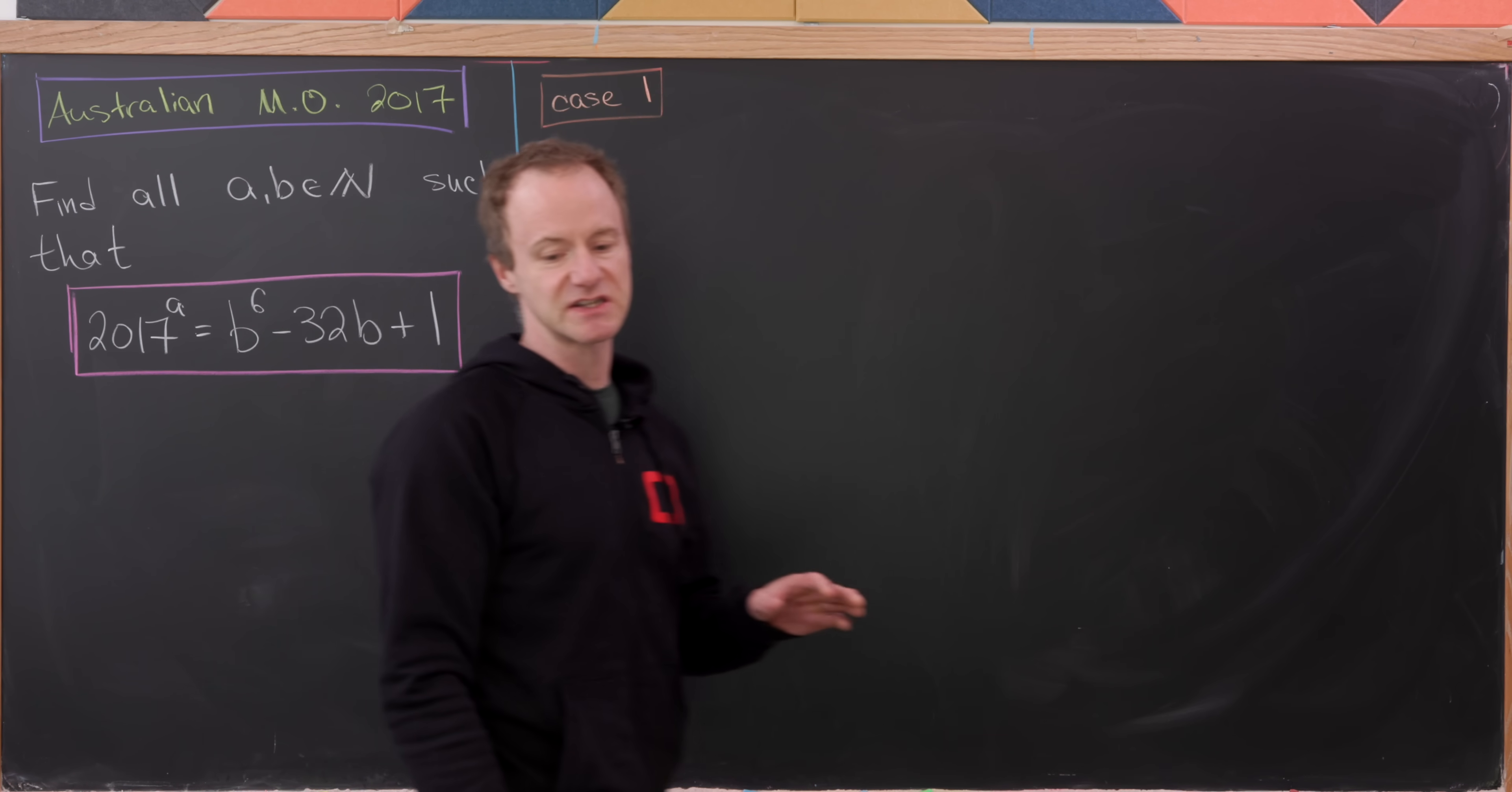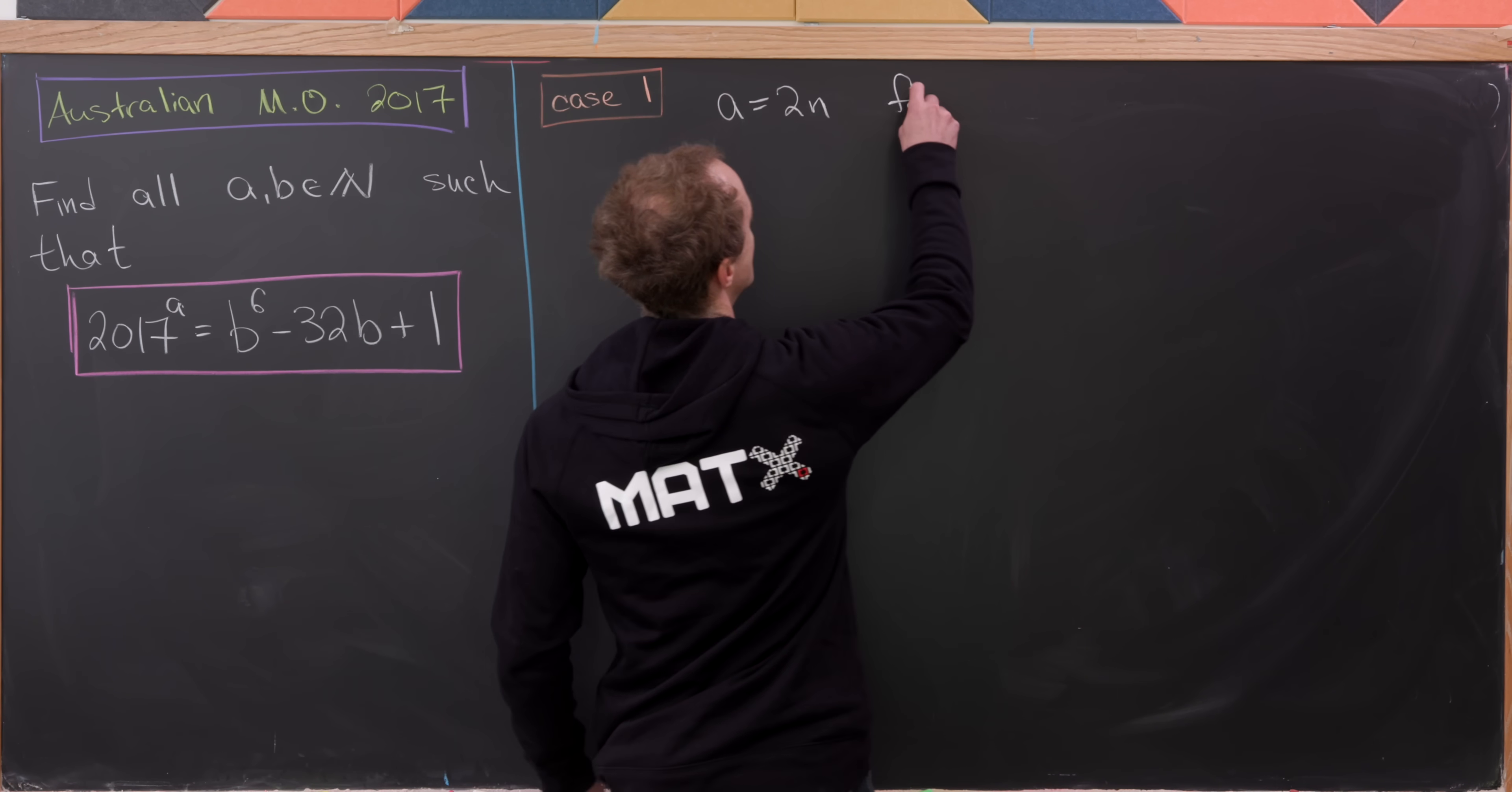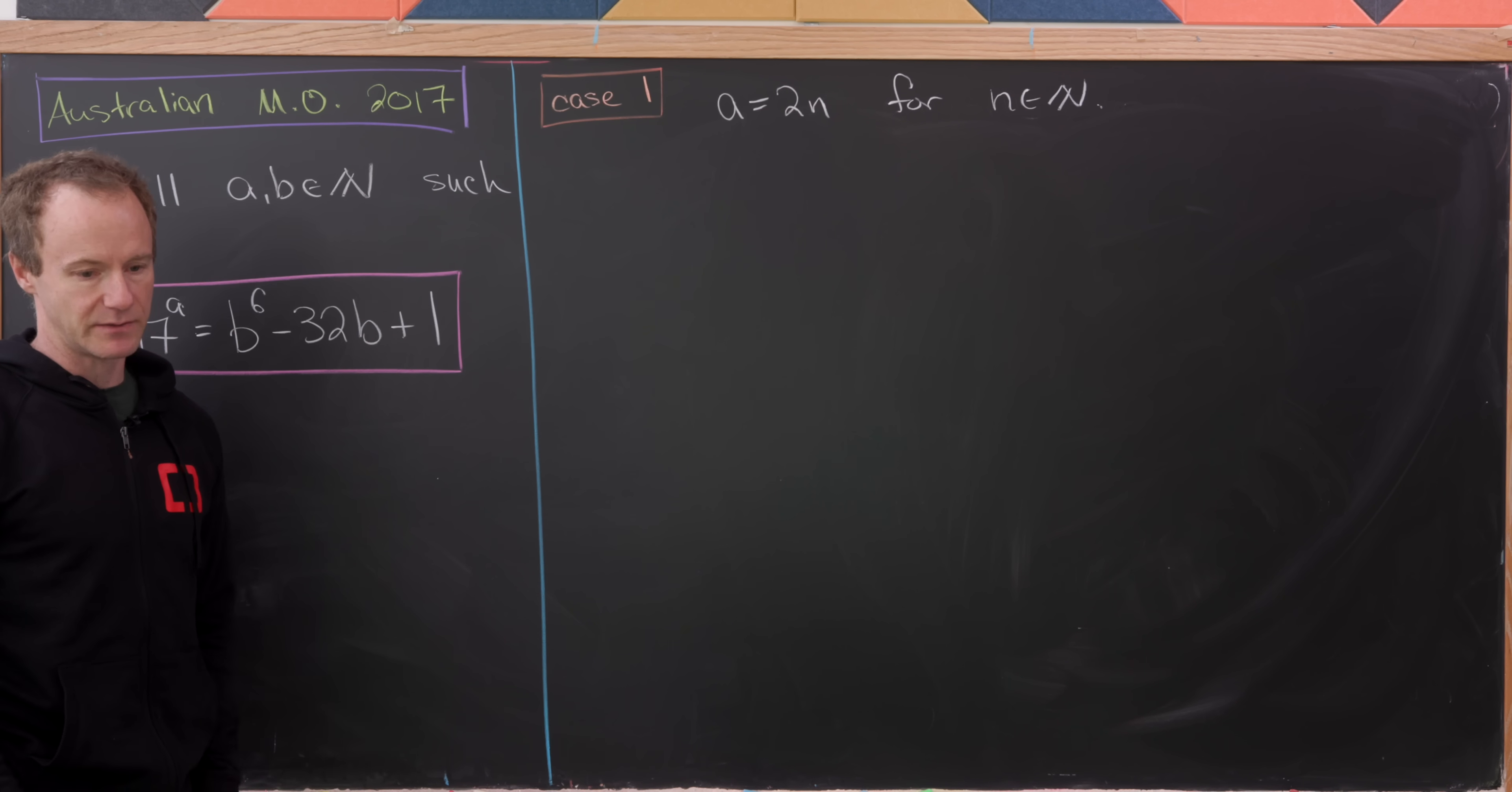I'm going to break this into two cases. My first case is when A is even. So I'll write A equals 2N for some natural number N. Because, of course, any even number can be written as two times some other number.